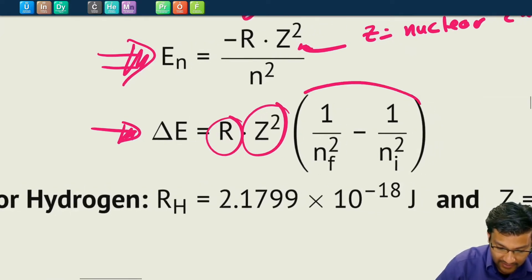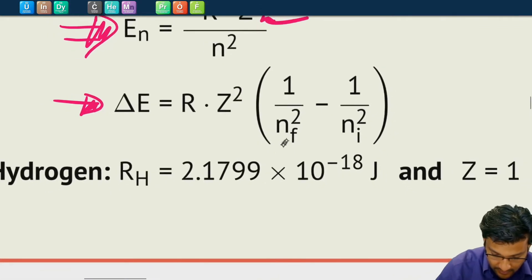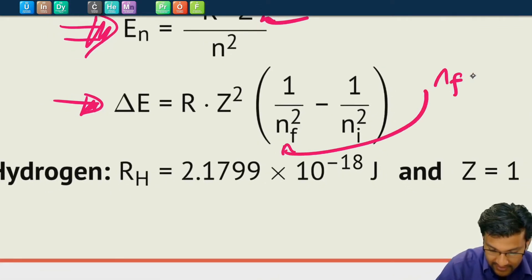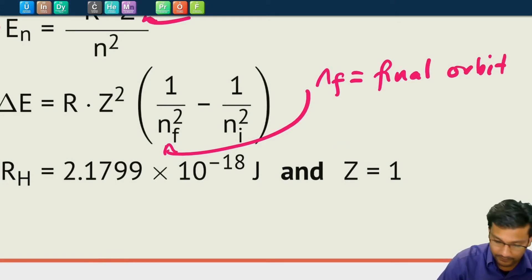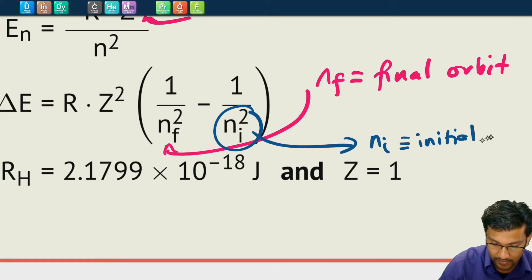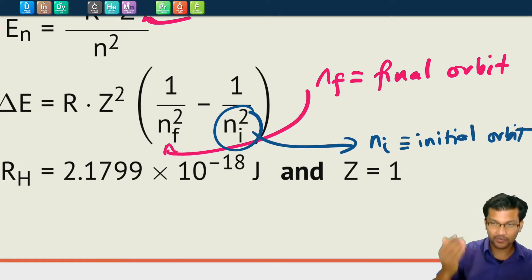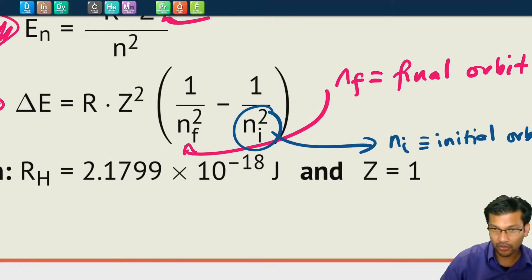So the difference in energy will be equal to that same constant times z squared, times the quantity 1 over nf squared minus 1 over ni squared. Here, nf is the final orbit, whereas ni is the initial orbit. Initial means where it started; final means where it ended up. And they're going to be whole numbers — 1, 2, 3, 4, 5, and so on.